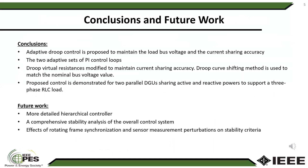In this work we used an adaptive droop control to maintain the load bus voltage and the current sharing accuracy of parallel three-phase inverter-based microgrid systems. There were two adaptive sets of PI control loops that included a secondary and also a primary control level. It was shown that the droop virtual resistances can be dynamically changed so that the current sharing accuracy is maintained, and also the droop curve shifting can be used to match the nominal value for the bus voltage. The behavior of the overall system under the proposed control was demonstrated for two parallel inverter systems that share active and reactive powers to support a three-phase RST load.